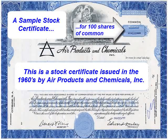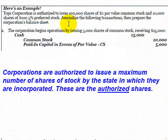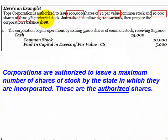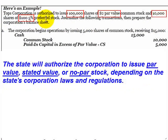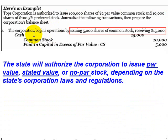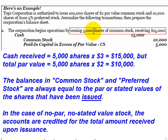This exercise is concerned with stock issuances. Our corporation has been authorized to issue 100,000 shares of $2 par value common stock, along with 10,000 shares of 5% preferred stock with a $100 par value. When our corporation issues the common stock, the debit to cash must be for the cash received from the investors — namely $15,000 — from the issuance of 5,000 shares, so the corporation is issuing the stock at $3 per share.